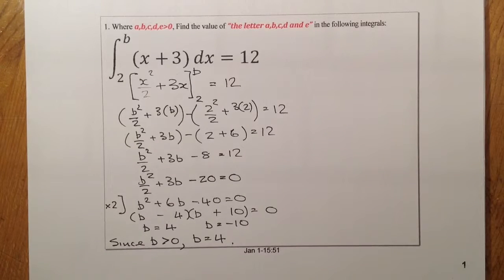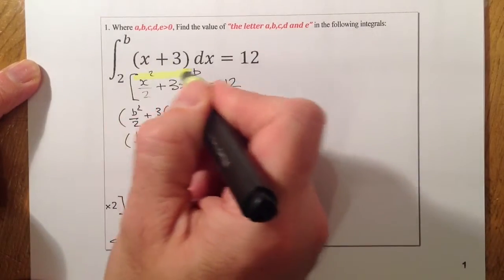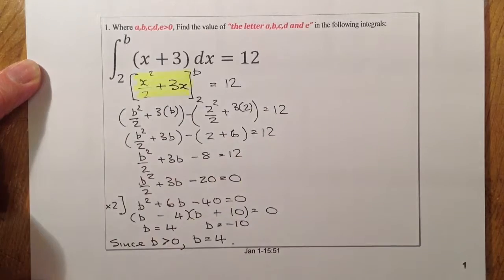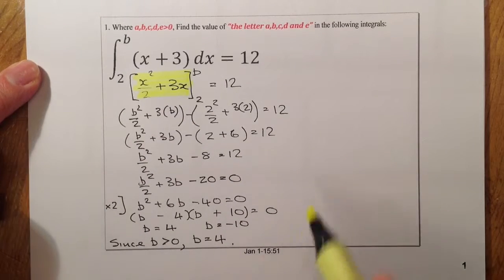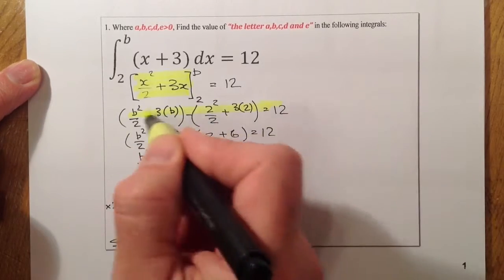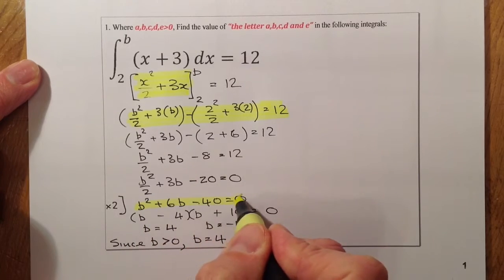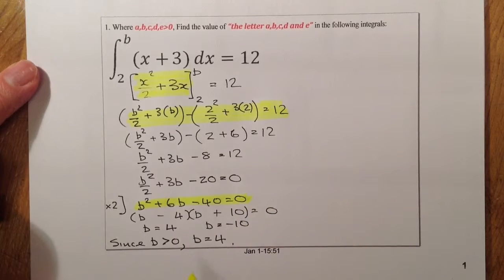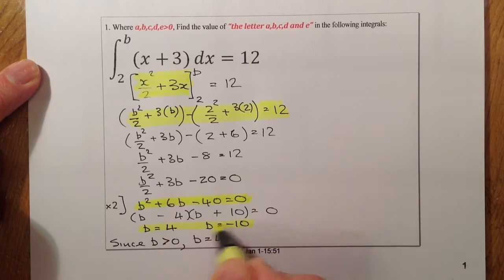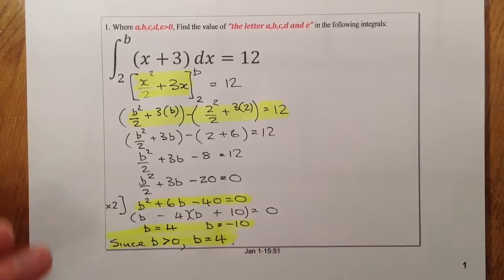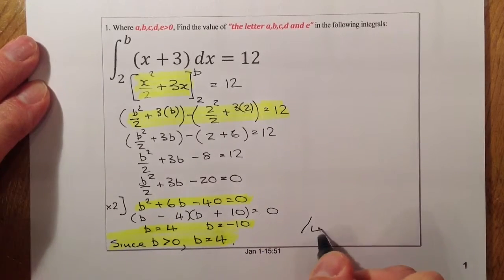Let's see how we're going to mark this one — I think four marks for this question. One mark for integrating. The next mark for substituting the values in. One mark for getting it to a form where we can solve the final equation. And the last mark for getting both solutions but also stating that B is only equal to 4. So this one is out of four marks.